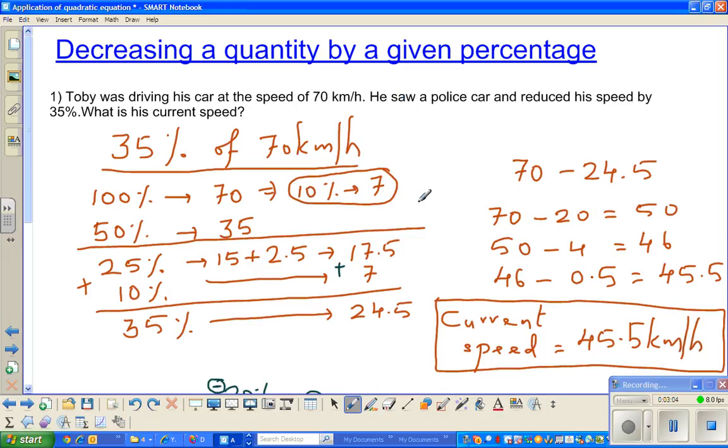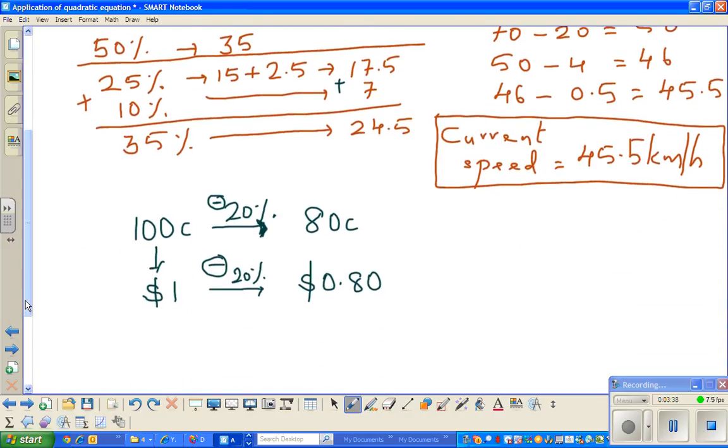But in real life, in many situations, you may be given this and asked to find backwards. That means his current speed is 45.5, and this was reduced by 35%, and you want to find his original speed. When you want to find the original amount, you can't go backwards. If you find 35% and then add it, you will not get this. This is very important. Let us look at the argument.